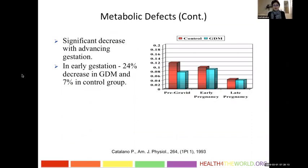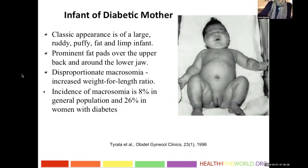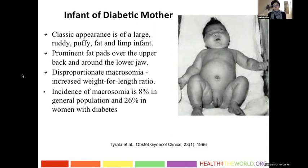Babies of diabetic mothers — one of the main complications is macrosomia, or large babies. The classic appearance is a large, puffy, fatty infant with prominent fat pads over the upper back and around the lower jaw, termed disproportionate macrosomia, meaning increased weight-for-length ratio. The incidence of macrosomia is 8% in the general population compared to 26% in women with diabetes.